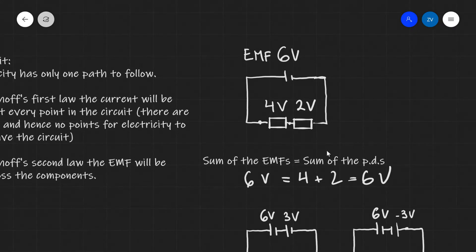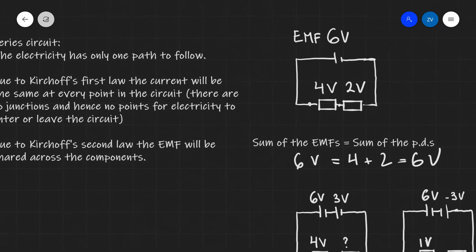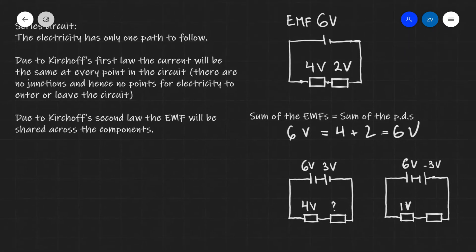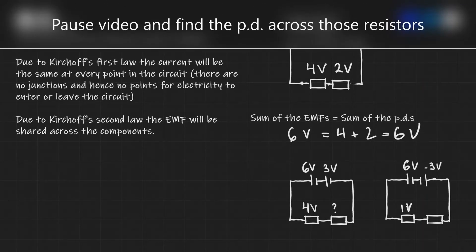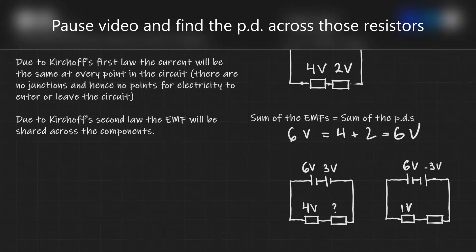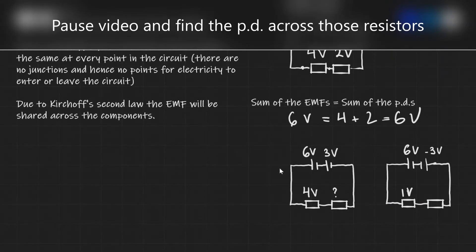The first example we looked at for Kirchhoff's second law was relatively simple — we only had one source of EMF and a couple of components, so 6 obviously equals 4 plus 2. Let's have a look at a slightly harder example in which we have more than one source of EMF. Why don't you guys pause this video and see whether you can tell me what are the values of the PD across those two resistors.